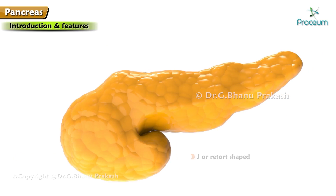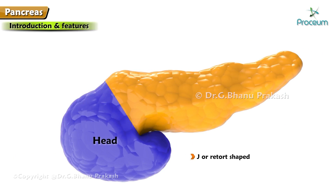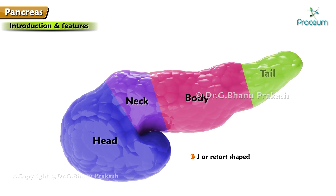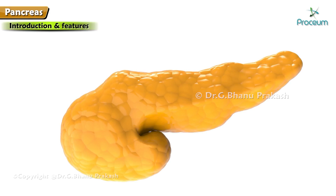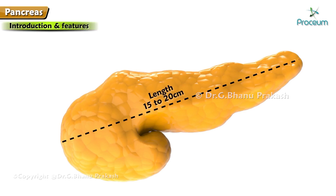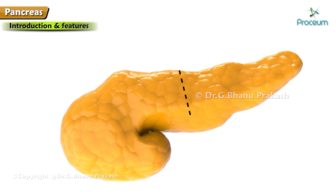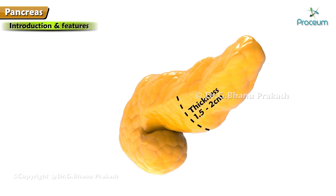It is J-shaped or retort-shaped. The bowl of the retort represents the head of the pancreas, and the stem of the retort represents the neck, body, and tail of pancreas. Measurements: length is 15–20 cm, width is 3–4 cm, thickness is 1.5–2 cm, and weight is 80–90 g.